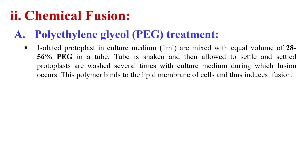What we exactly do: isolated protoplasts in the culture medium are mixed with an equal volume of 28% to 56% PEG in a tube. This tube is shaken and allowed to settle. The settled protoplasts are then washed several times. During this, fusion occurs because polyethylene glycol induces the protoplasts to fuse. Fusion generally takes about 45 minutes of incubation at room temperature. PEG binds to the lipid membrane of cells and thus induces the fusion. This is one of the most commonly used chemicals for chemical fusion of protoplasts — polyethylene glycol, PEG.